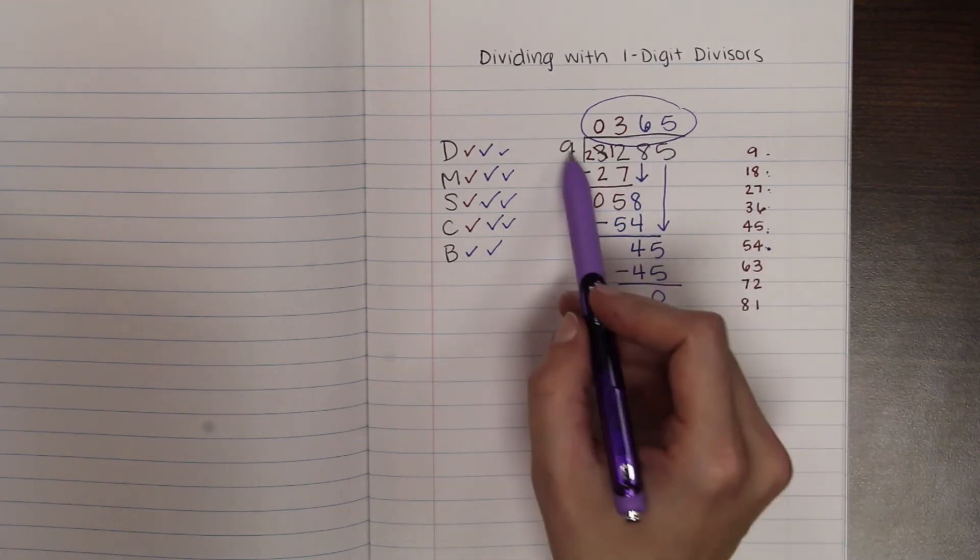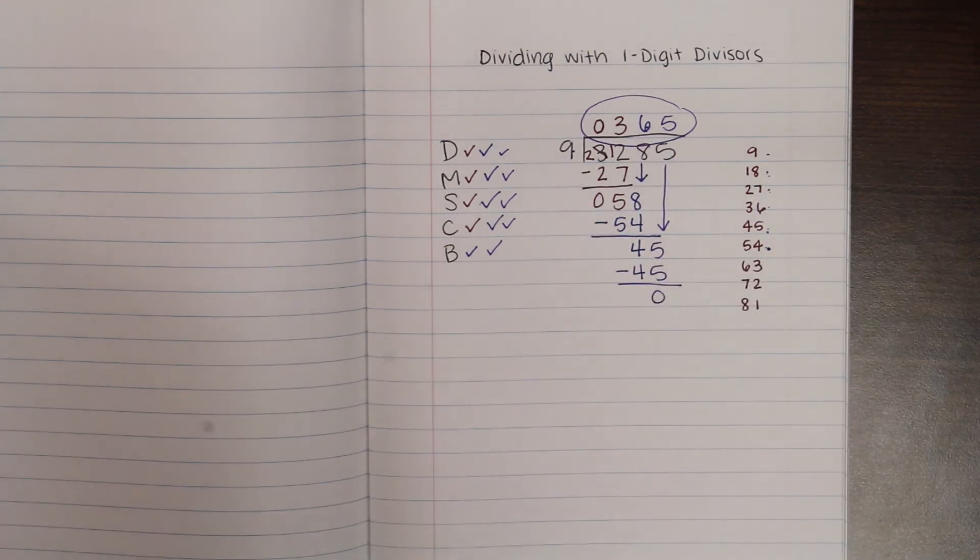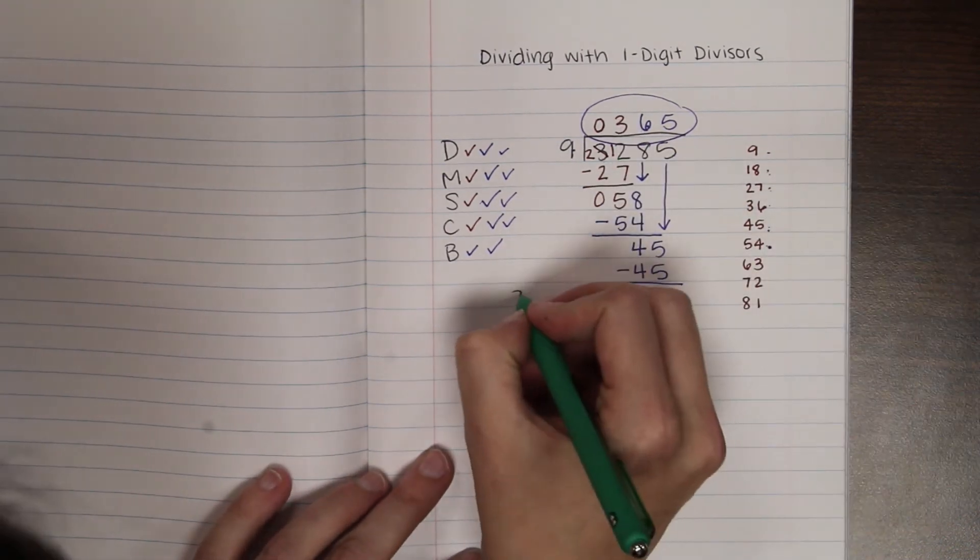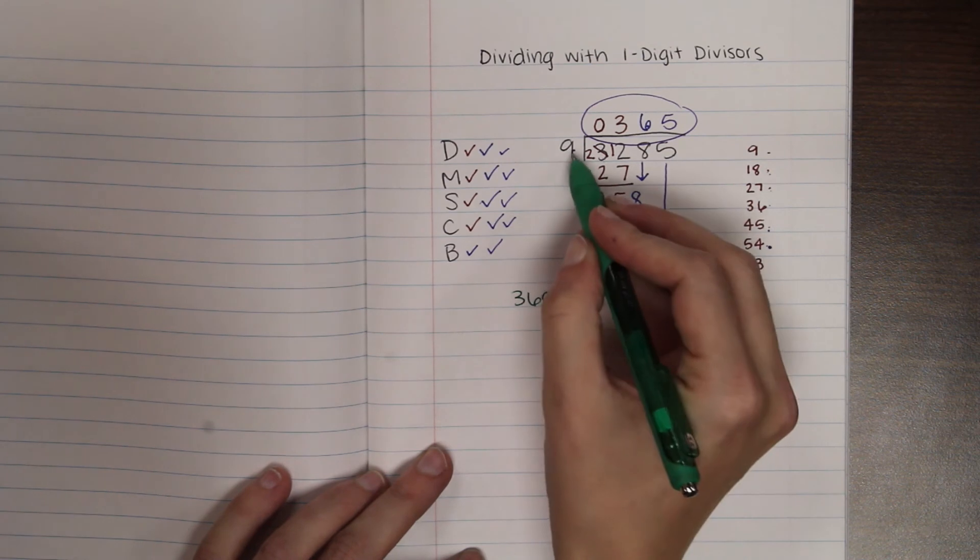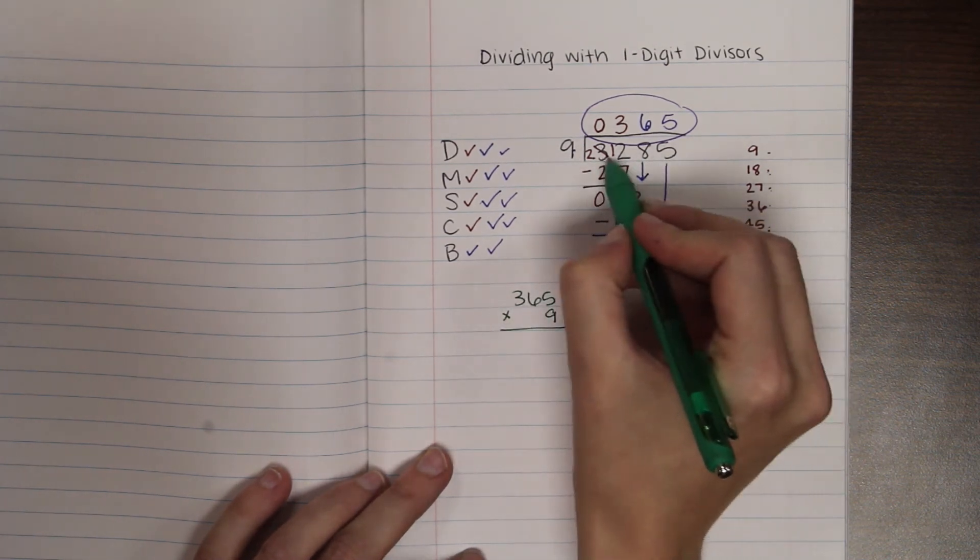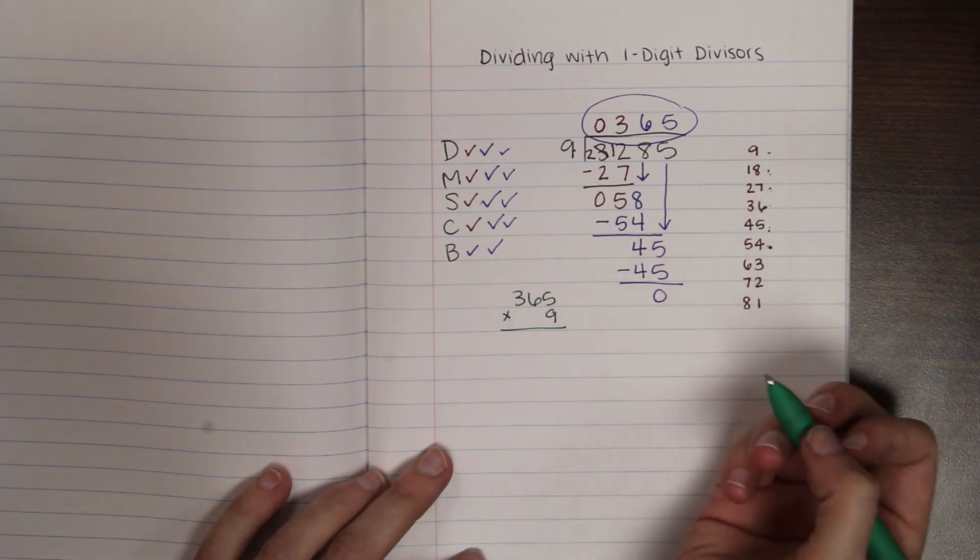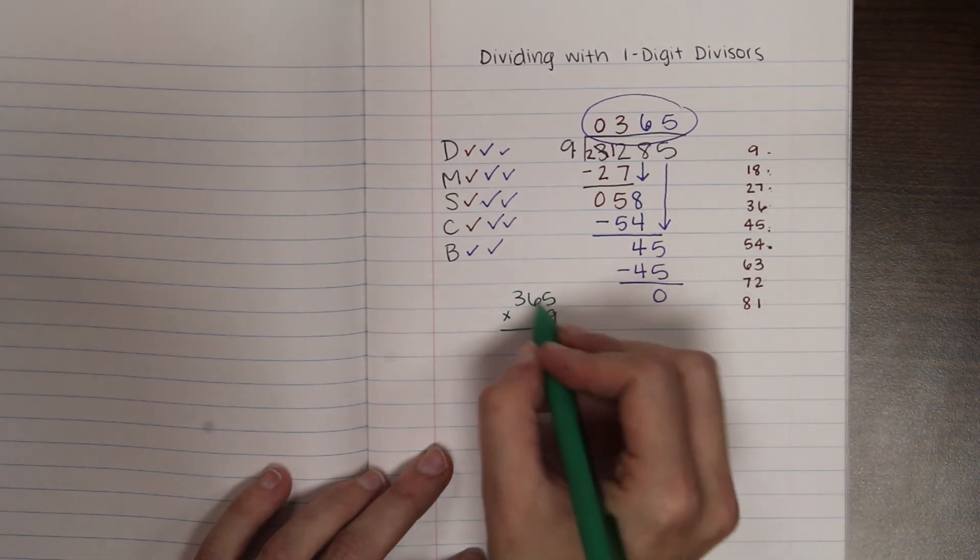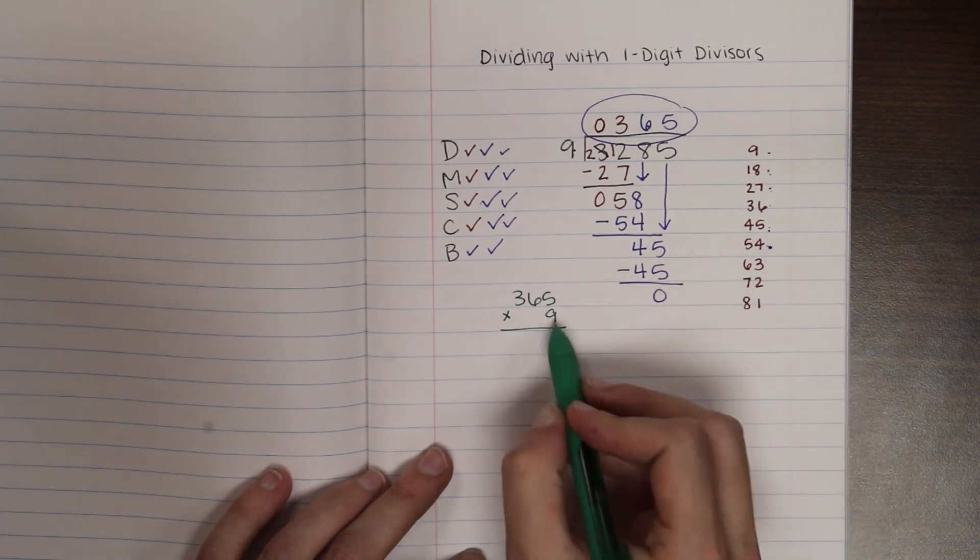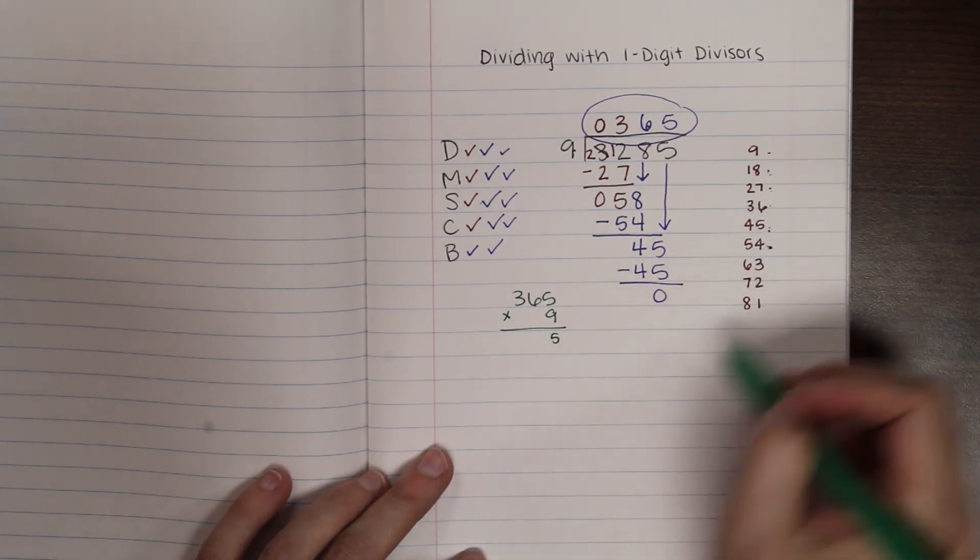A great thing to do too, especially when this is with a one-digit number, is come over to the side at the end. Take your quotient, your answer. Multiply it by your divisor. And if you get your dividend here, your 3,285, then you know that you're right. And this is usually a little bit easier to do than the long division, so you can catch some mistakes that you might do. And handy-dandy, you have your 9s written over here, so you don't even have to worry about it.